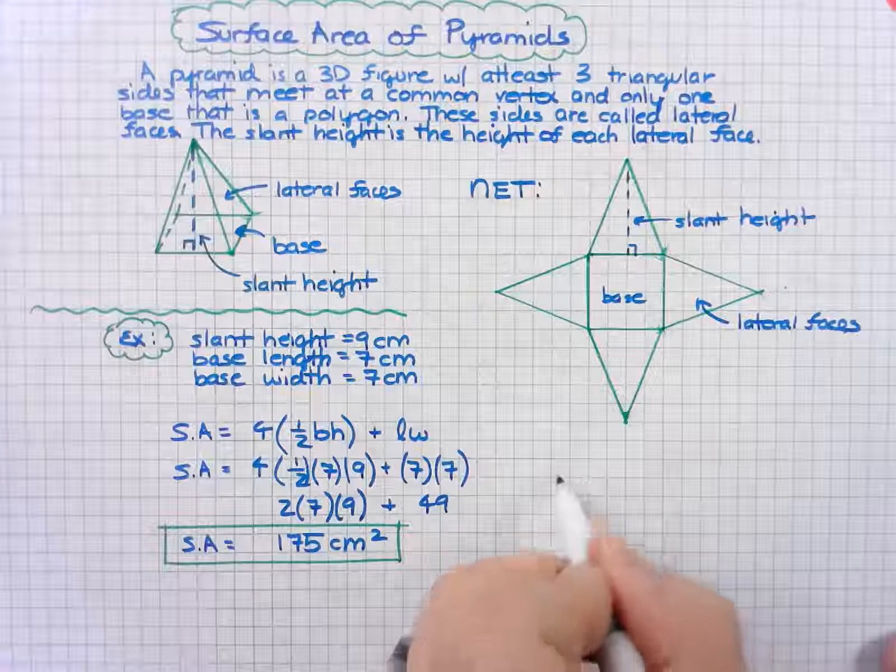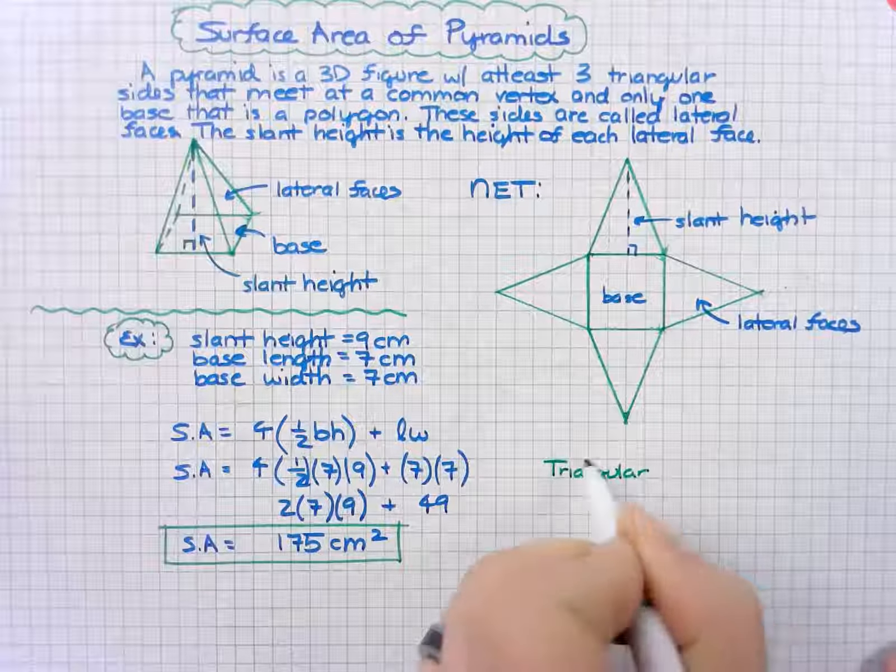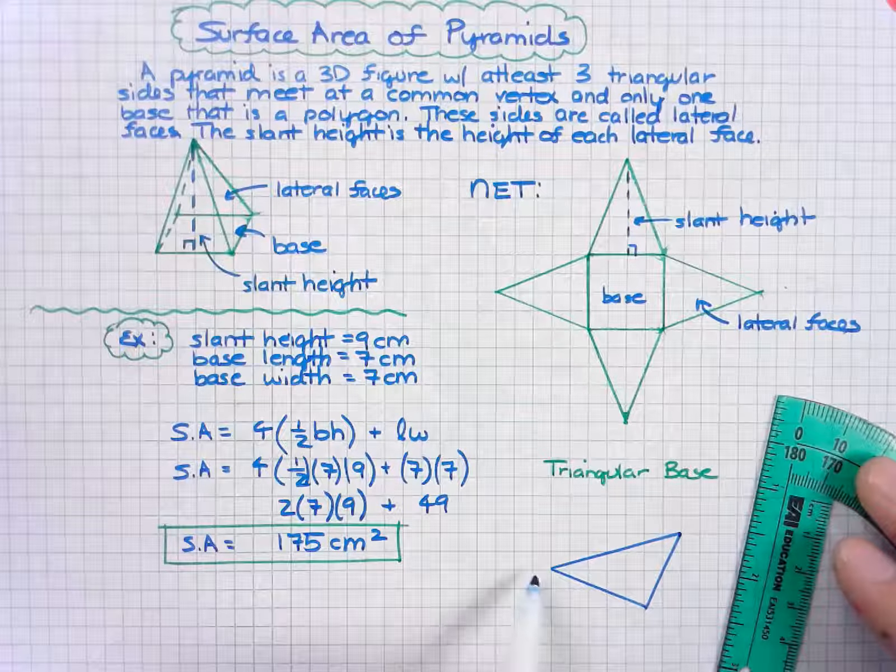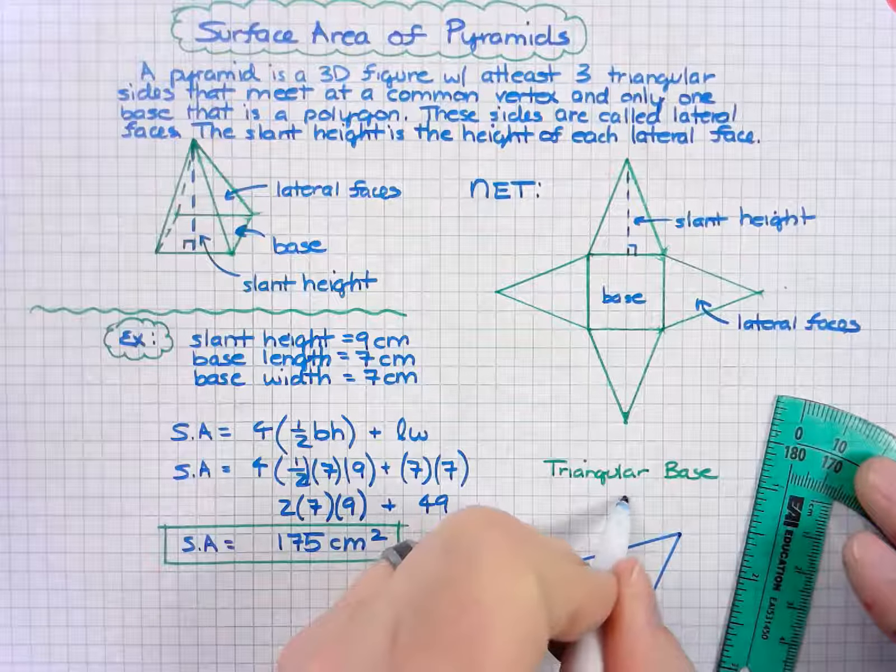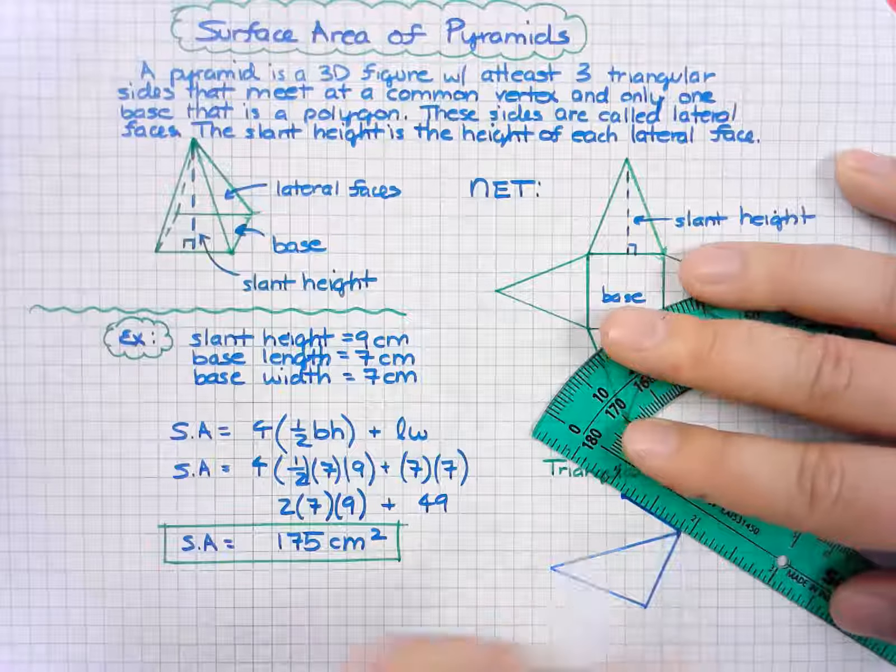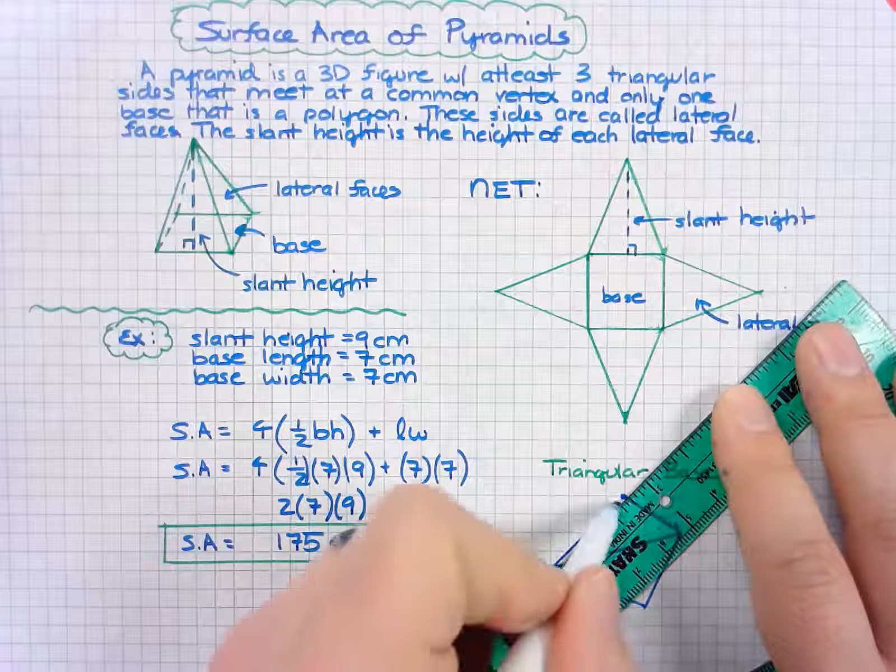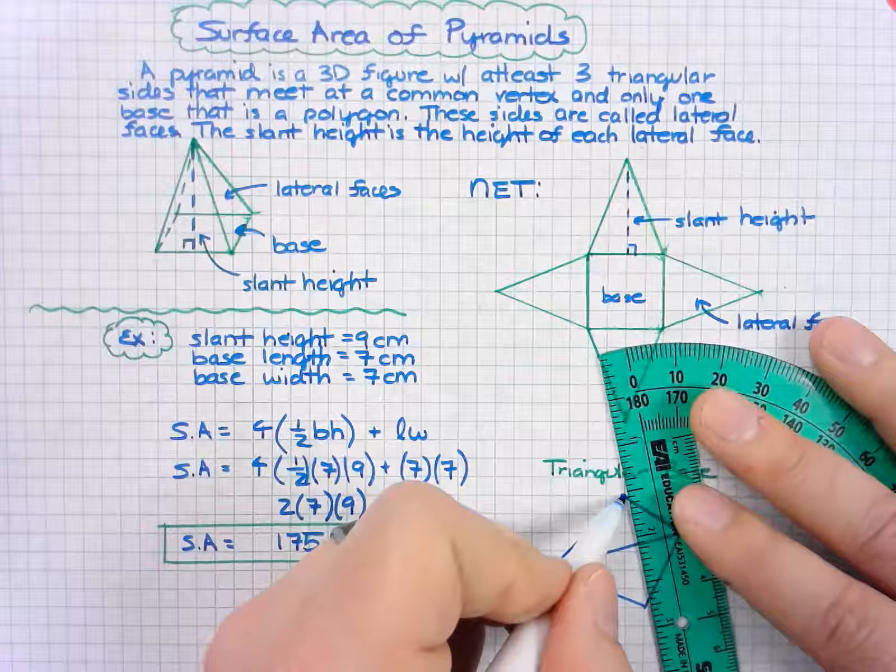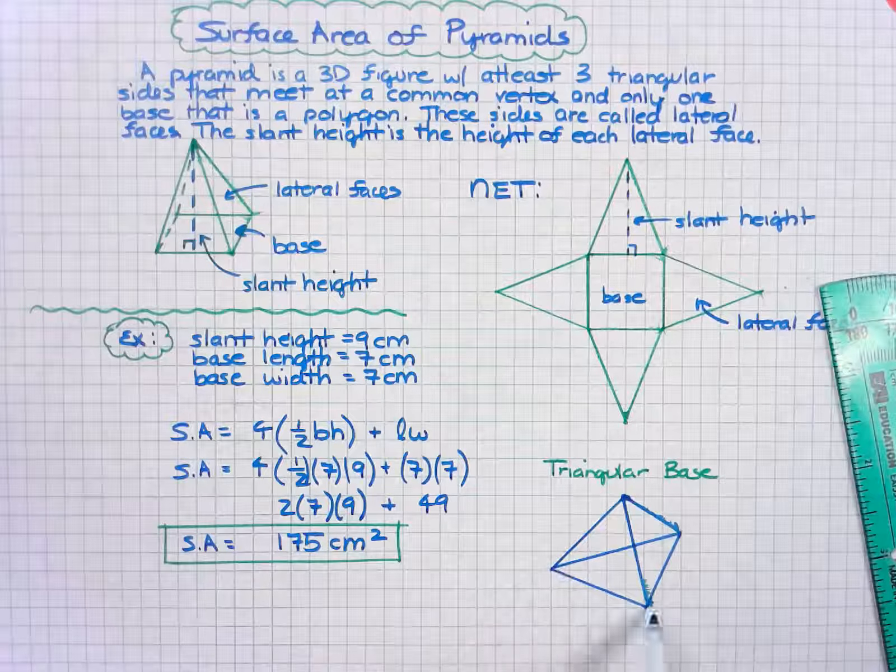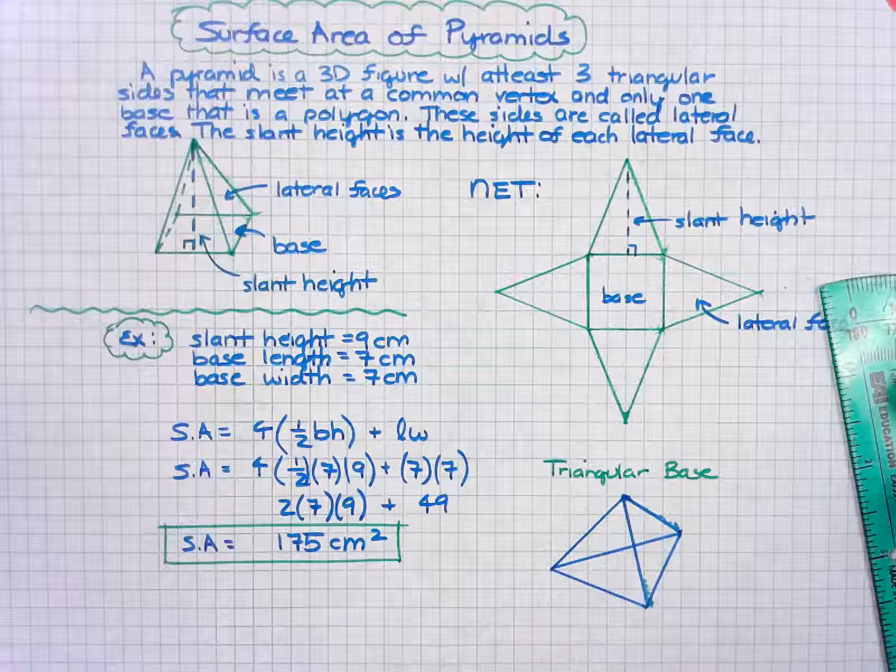One more thing I want to show you is a triangular base. If I have a triangular base and extrude it up to a point, I can create a pyramid by connecting all three vertices. Now you see we have a triangular base, and then three triangular lateral faces with a slant height.